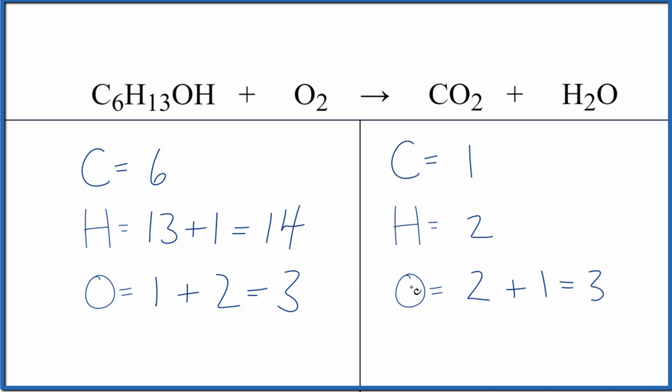I like to leave the oxygens till last when I'm balancing these equations. Let's just do the carbon. We could put a 6 in front of the CO2. 1 times 6, that equals 6. And then we need to update the oxygens. So 6 times 2 is 12 plus this one out here with the water. 13.